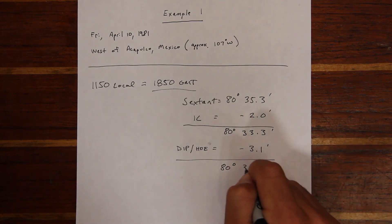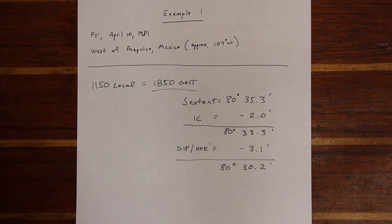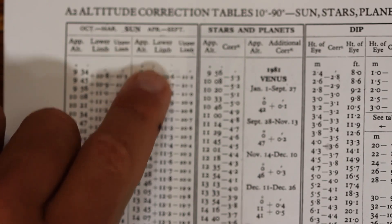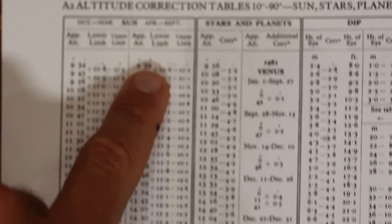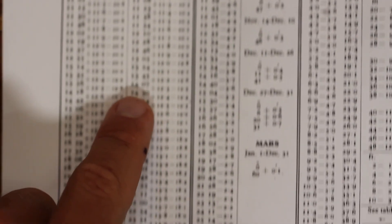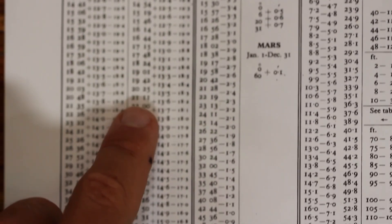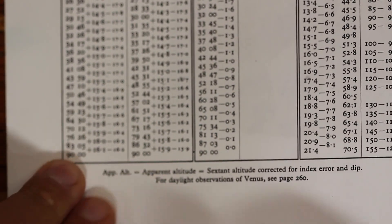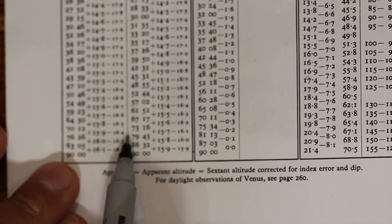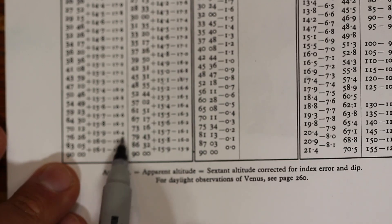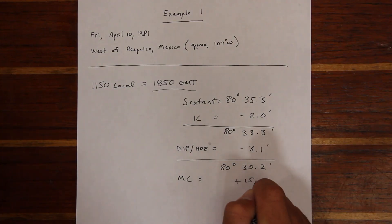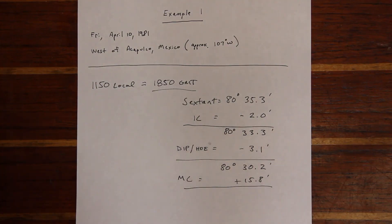This figure is called apparent altitude and we use it to enter the apparent altitude tables. We look under our appropriate month and the limb that we shot. We come up with a main correction of plus 15.8 degrees, and once we apply that to the figure we have our observed altitude.